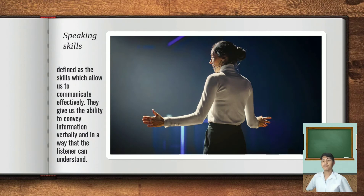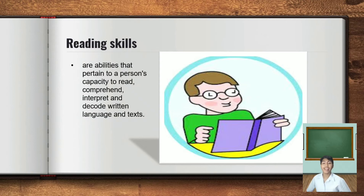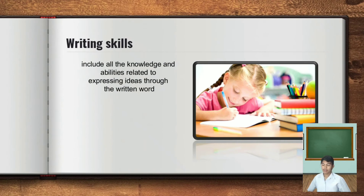The second skill is speaking skill. Speaking skills are defined as the skills which allow us to communicate effectively. They give us the ability to convey information verbally in a way that the listener can understand. The third macro skill is reading skills — the abilities that pertain to a person's capacity to read, comprehend, interpret, and decode written language and text. The last skill is writing skills, which includes all the knowledge and abilities related to expressing ideas through the written word.